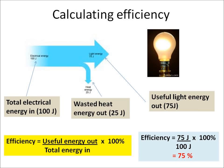Efficiency is calculated as the useful energy coming out divided by the total energy going in, multiplied by 100% so that we turn it into a percentage. In the example, we've got 100 joules of electrical energy going in, 25 joules coming out as wasted energy, and 75 joules coming out as useful light energy. So the efficiency will be 75 divided by 100 multiplied by 100%, which gives us 75%.